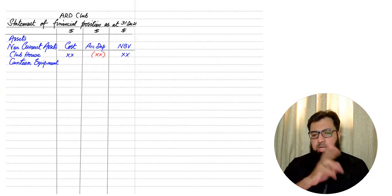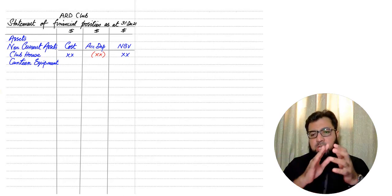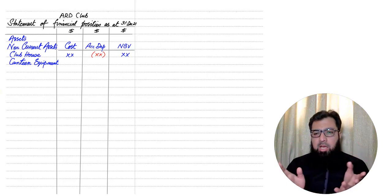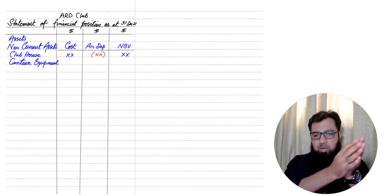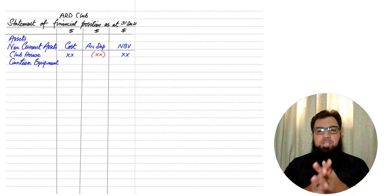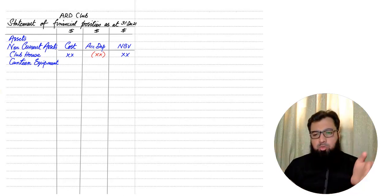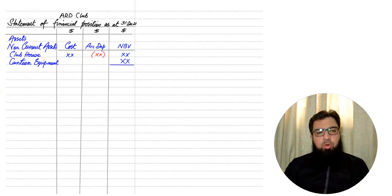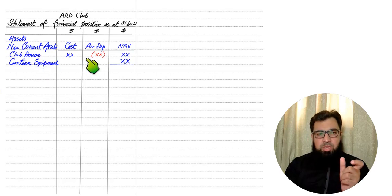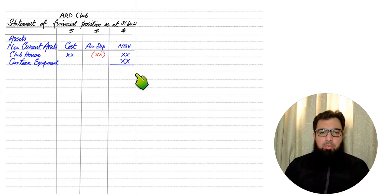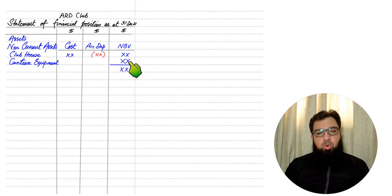Then we have equipment for the canteen. You may be aware that we made two income statements — one for the canteen and one for the entire club — but for the statement of financial position, we will be making one statement for the entire club, including the café and the canteen. All assets will be added here whether they belong to the club or to the café, shop, or bar. If we only have one value given in the question — that is, net book value — we write it in the net book value column directly. Adding these gives the total for non-current assets.